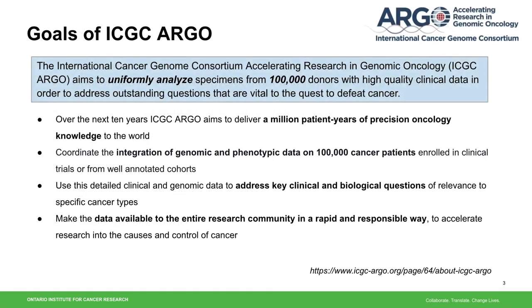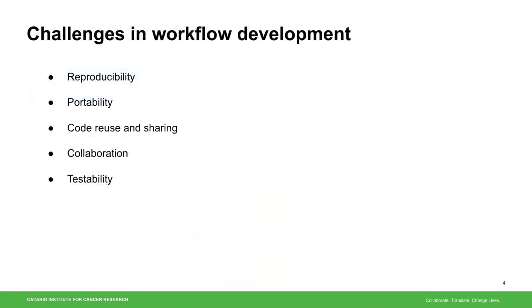The development of WFPM started from the ICGC-ARGO initiative, so let me briefly introduce it here. ICGC-ARGO aims to uniformly analyze specimens from 100,000 donors with high-quality clinical data in order to address outstanding questions that are vital to the quest to defeat cancer. In order to achieve ambitious goals of delivering precision oncology knowledge derived from clinical and genomic data, uniform data analysis is at the crux. Uniform analysis on large, complex, and globally distributed data requires analytic workflows to address these challenges.